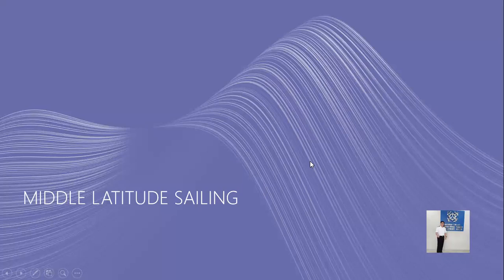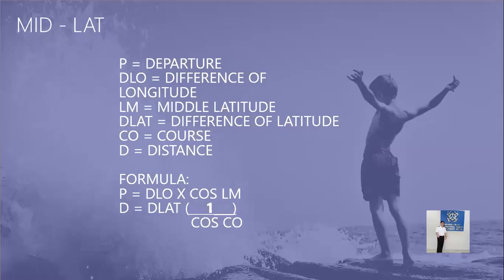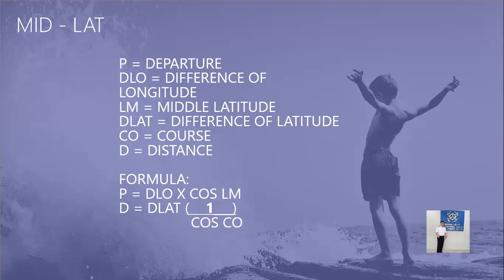Middle latitude sailing is almost somewhat the same as parallel sailing, because you have to compute and average your two latitudes in order to get the middle latitude. These are the formulas to be used: P is your departure, D-lo is your difference of longitude, Lm is your middle latitude, D-lat is your difference of latitude, and you have your course and D for distance.